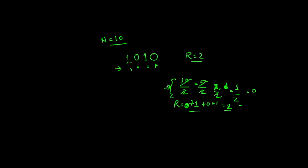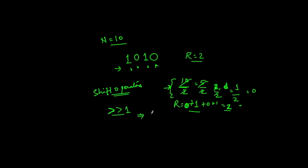But what if someone asks you to solve this without using a division operator? Then we can solve it using shift operators. We know that right-shifting a number by 1 is equivalent to dividing that number by 2.